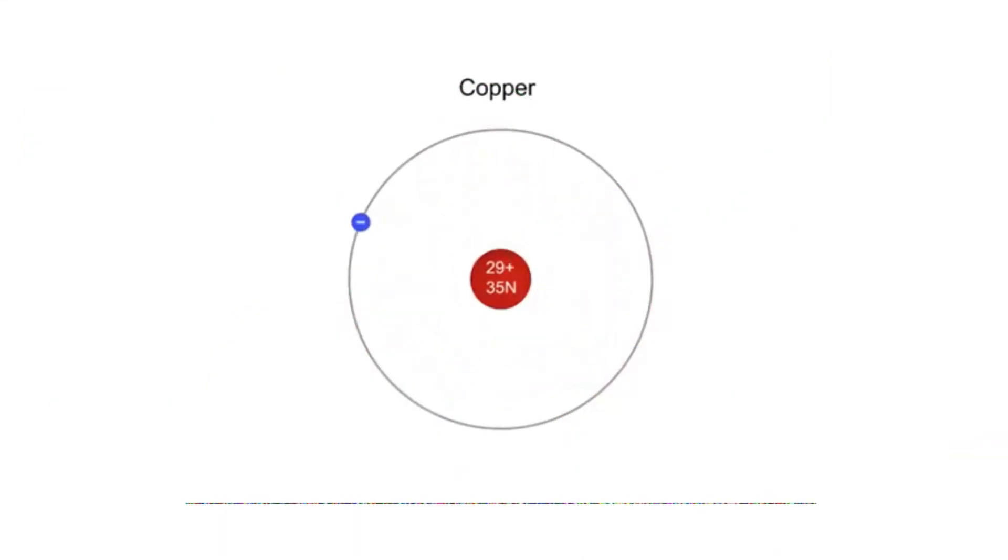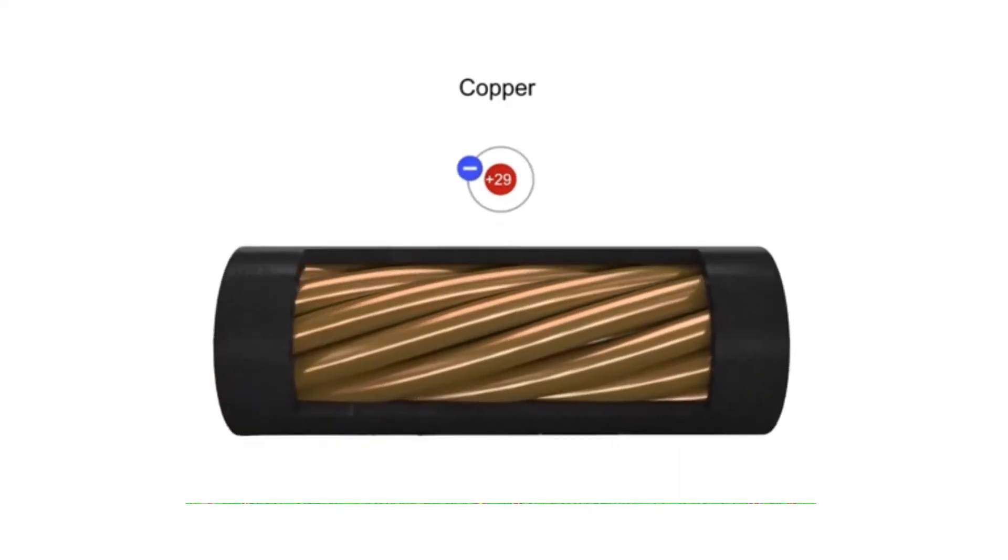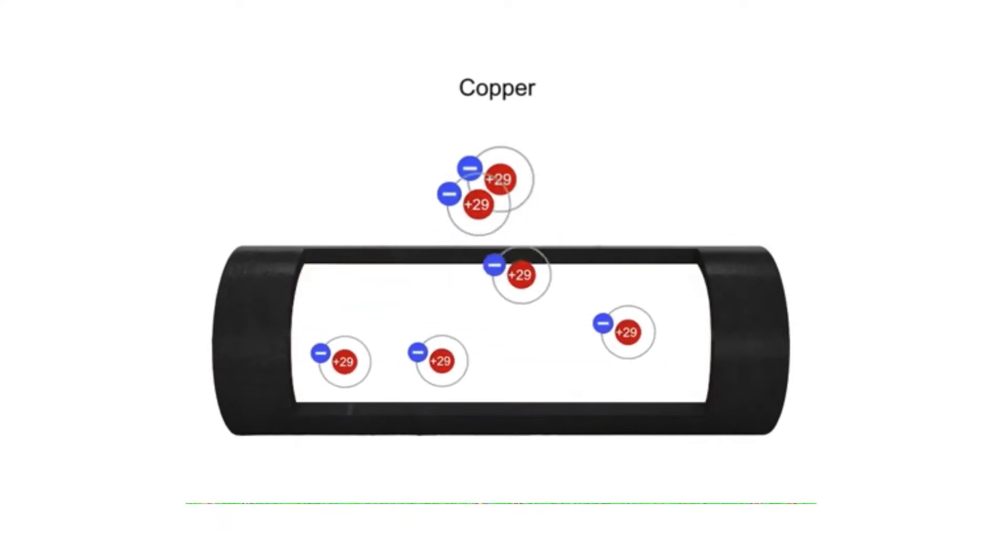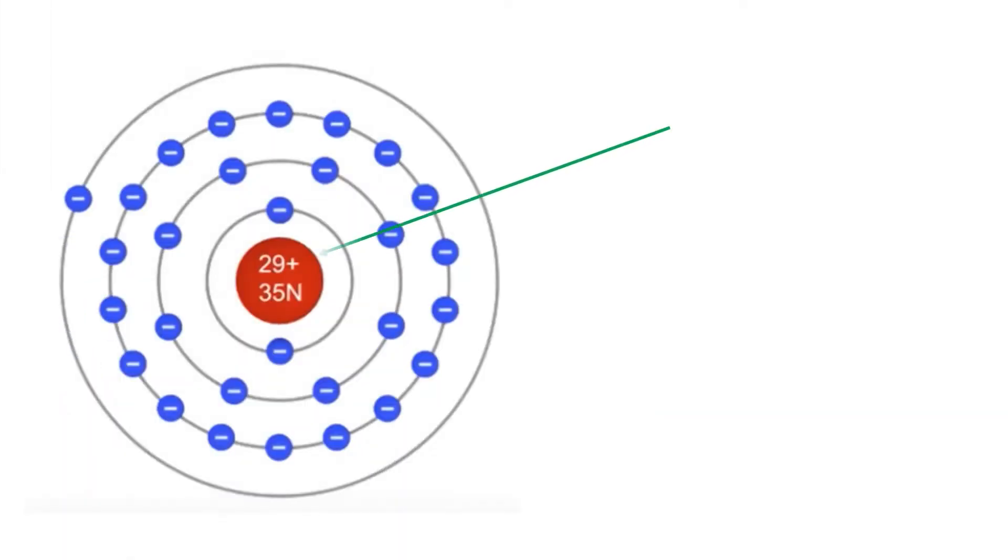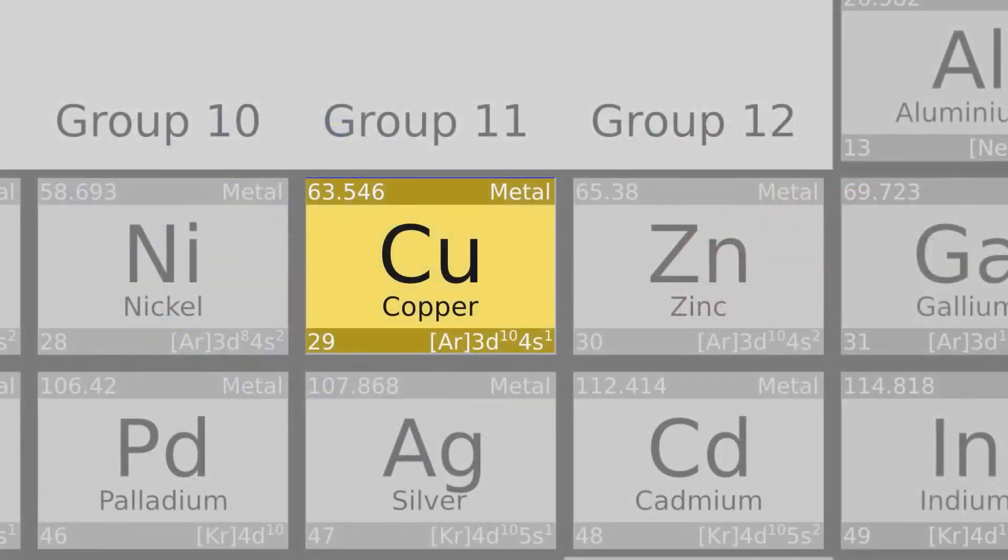Every single atom of a given chemical element has the same number of protons in its nucleus. This number of protons defines the atomic number of an element. Thus, it also determines the position of that element in the periodic table.